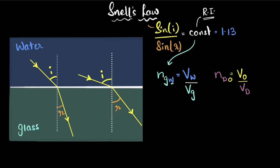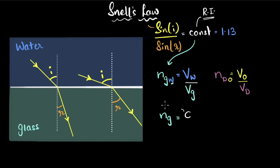What if the reference medium is vacuum? We don't write vacuum explicitly — vacuum is special. We simply write the refractive index of glass, and if no reference medium is mentioned, it automatically means vacuum. That is the convention. So the refractive index of glass equals the speed of light in vacuum — C, which is 3×10⁸ meters per second — divided by the speed of light in glass.